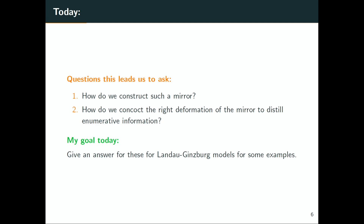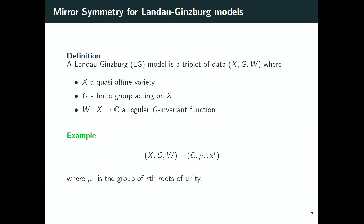Now I'm going to say that I'm going to answer these questions for Landau-Ginzburg models, so I should tell you what a Landau-Ginzburg model is. A Landau-Ginzburg model is a triplet of data where I take a quasi-affine variety X, a group (I'm going to just choose finite groups today, though you can choose reductive groups), and just a regular G-invariant function W from X to C. The first example is I'm going to take complex numbers, or A1, then x to the r is a perfectly good regular function, and then I'm just going to take roots of unity acting on that. That's the first example of a Landau-Ginzburg model.